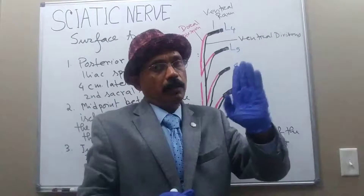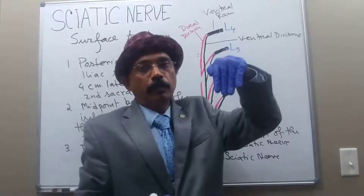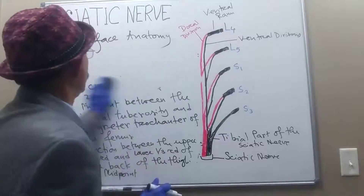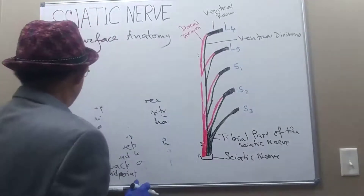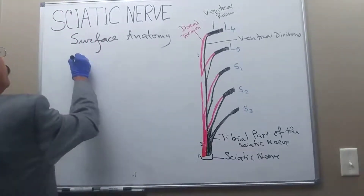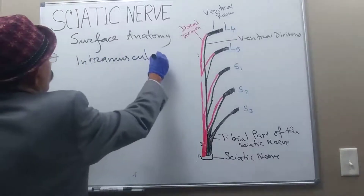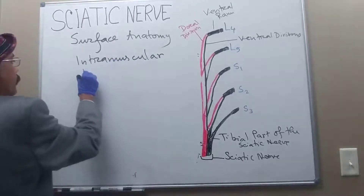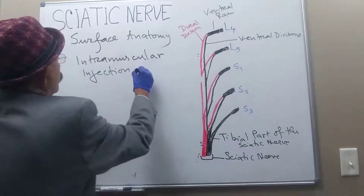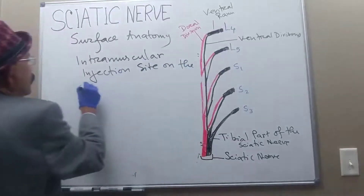The nerve goes a bit laterally and is almost in the middle of the back of the thigh. Now we have to know the importance of this surface anatomy. One important application is the intramuscular injection site on the gluteal region.